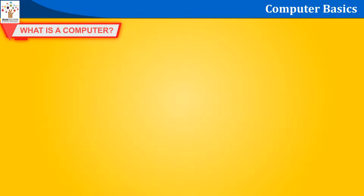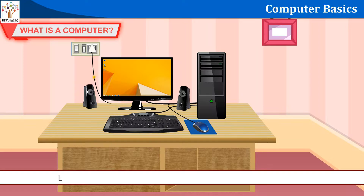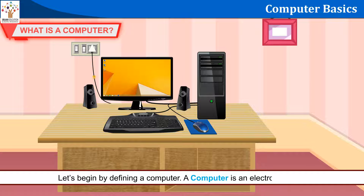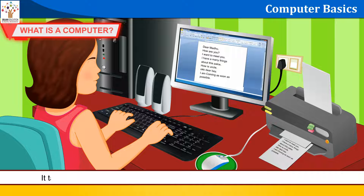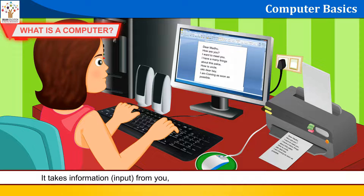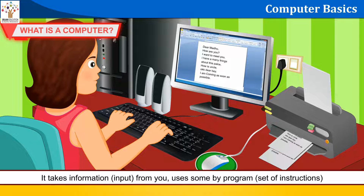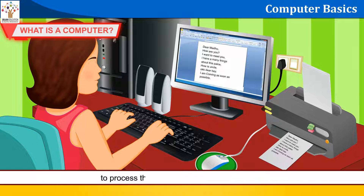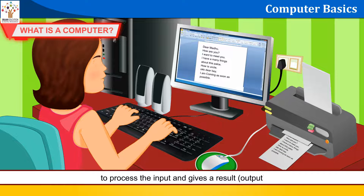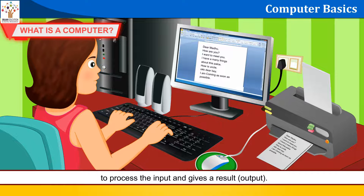What is a computer? Let's begin by defining a computer. A computer is an electronic machine. It takes information, input from you, uses a program — a set of instructions — to process the input and gives a result, output.